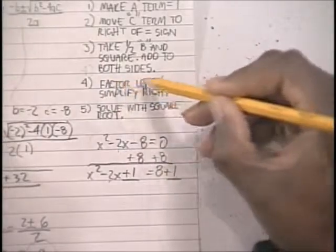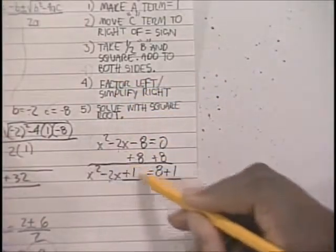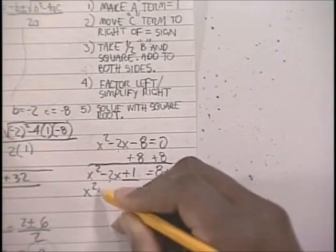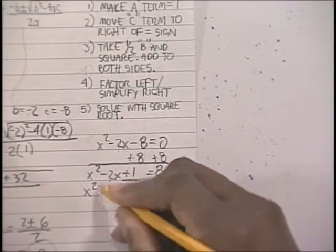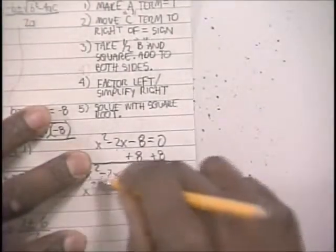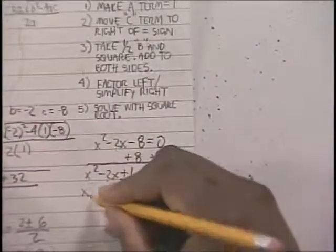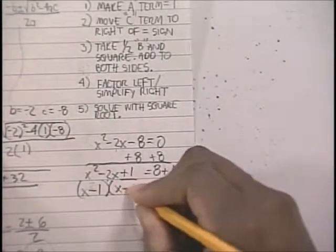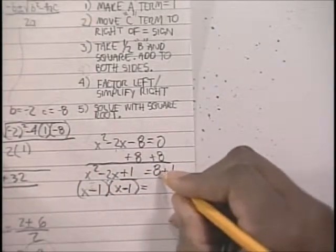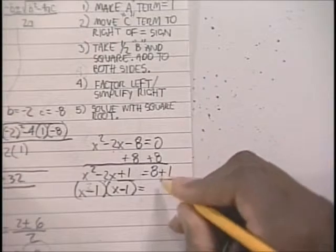This fourth step is to factor the left. So you end up with x minus 1 times x minus 1. You factor that and you simplify the right—you get 9.